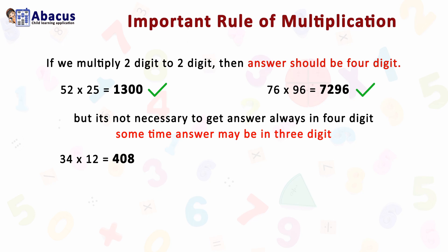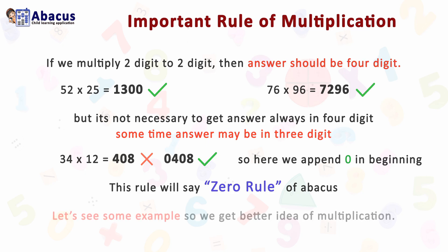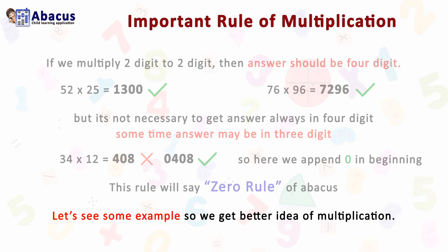34 multiplied by 12 equals 408, but the correct representation is 0408 — we append a zero at the beginning. This rule is called the Zero Rule of Abacus and is the most important rule in multiplication. Let's see some examples to get a better idea.